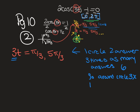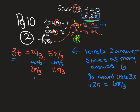To go around the circle, you add 2π. In this case, 2π equals 6π/3 so the denominators match. Adding 6π/3 to π/3 gives 7π/3, and adding again gives 13π/3. Adding 6π/3 to 5π/3 gives 11π/3, and adding again gives 17π/3.